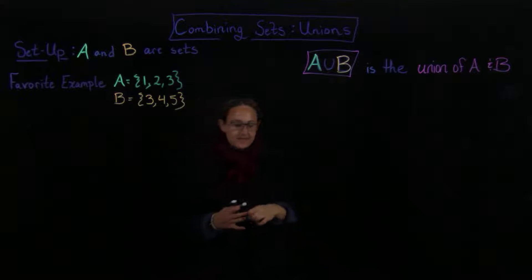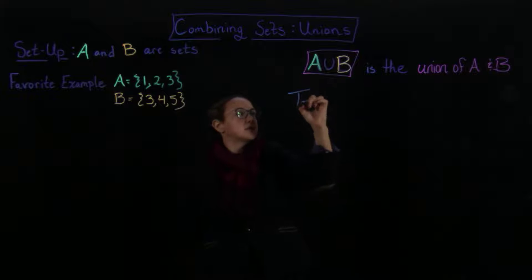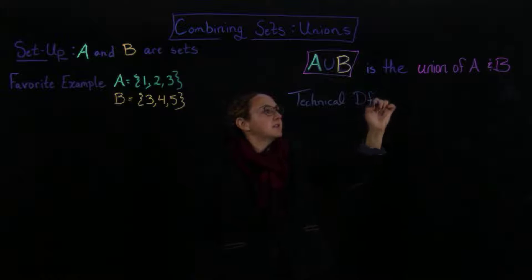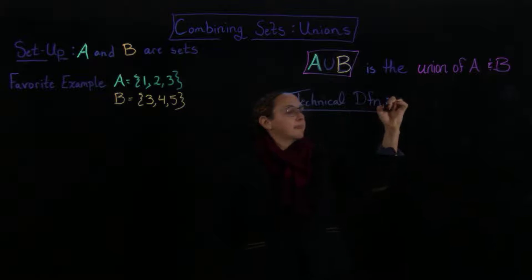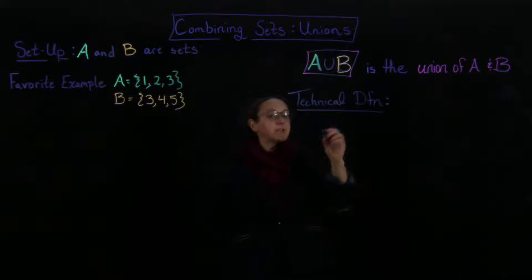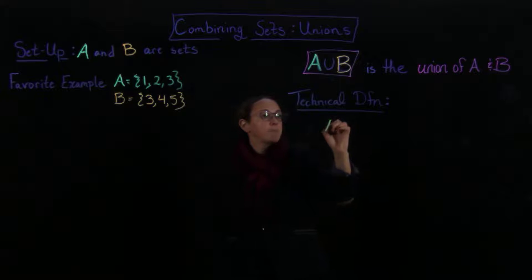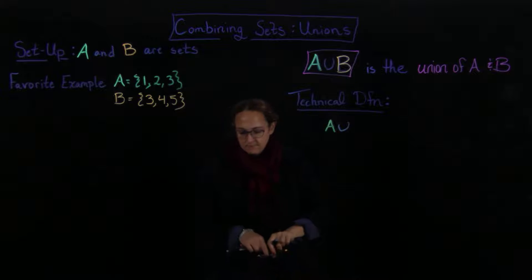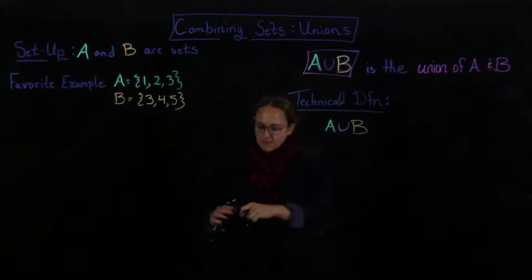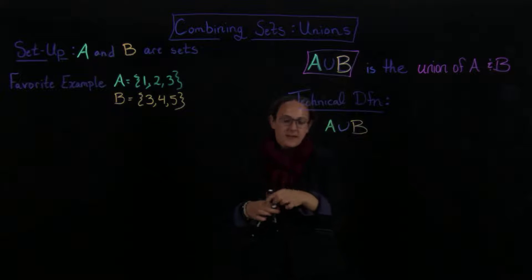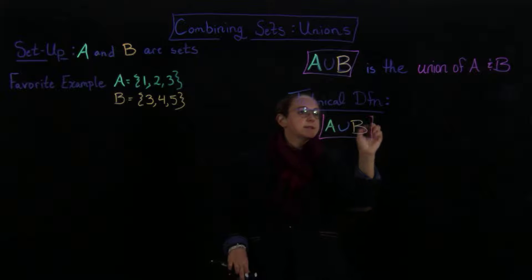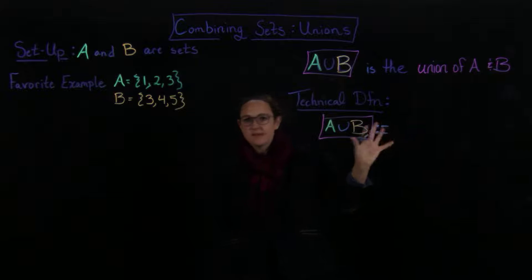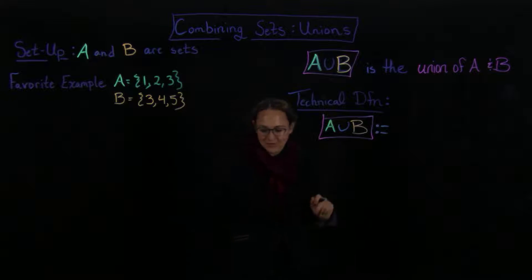So what is the technical definition of this? So the technical definition, D F N for definition. So the technical definition is that I'm going to take A when I write A union B, so this, and we're boxing it in red, this is the definition of what this is. So this is defined to equal, so this is what it means when I write kind of a colon and then an equal sign after that. That means I'm saying this is defined to equal, so I'm giving you the definition of it.